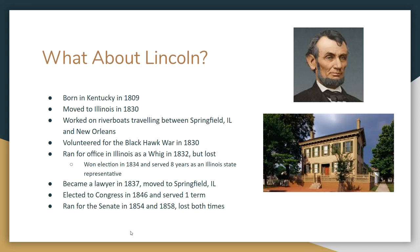Lincoln starts running for office in 1832 as a member of the Whig Party. He runs for Illinois State Representative, loses, then wins in 1834 and serves eight years in that role. In 1837, Lincoln becomes a constitutional lawyer and moves to Springfield, Illinois — both to open a law firm and because that's where the state capital ends up. In 1846, he's elected to Congress as a U.S. Congressman, serves one term from 1846 to 1848 in Washington D.C., then returns home to practice law for a couple of years.